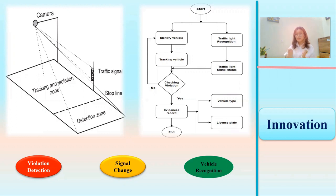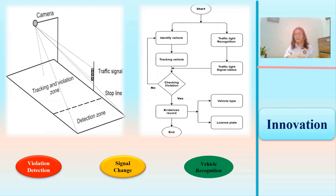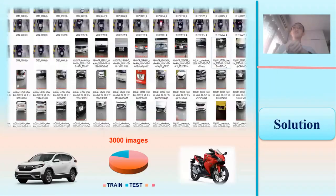The image is given to the camera as an input, where it is processed, compared with traffic signal changes, and checked for violation. During this event, the number plate of the vehicle is detected and an evidence video is recorded.